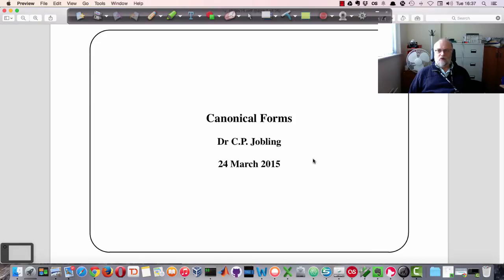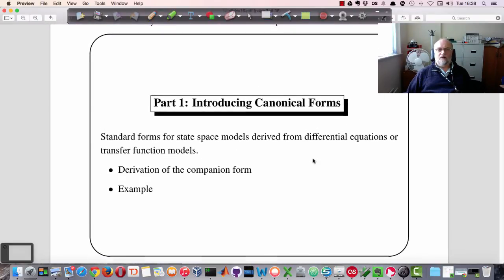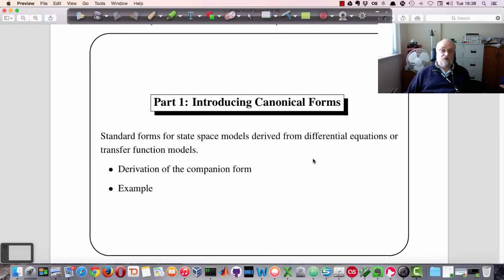You want to get a state-space model that has certain properties. It's sort of standard forms that you go through. There's no unique solution, no unique state-space model. Lots of ways you could transfer function or a differential equation to state-space. So these Canonical Forms are the recognized ways of representing systems. There's going to be two sessions on this and we'll try and do a lot of the work in the class, work solutions for things.